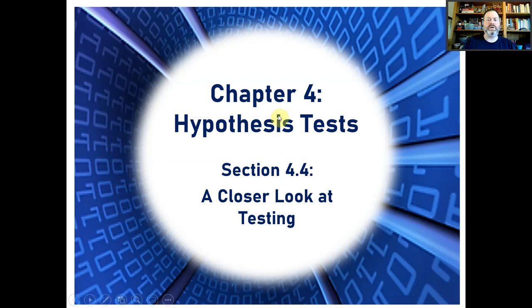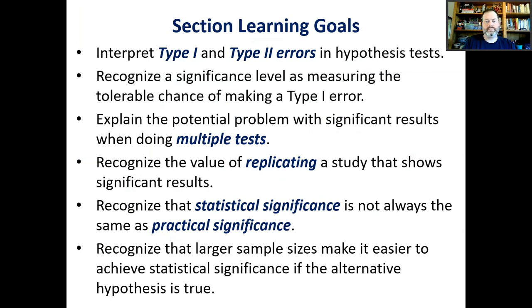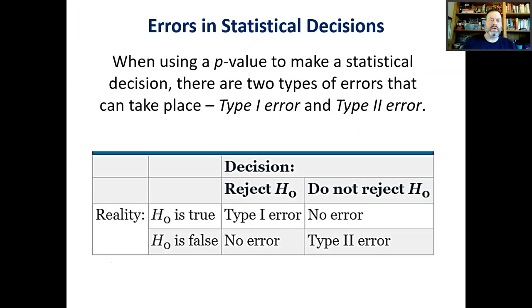In this section, we're going to keep going with Chapter 4 and look a little closer at hypothesis testing. The first thing we're going to talk about is what happens if you make a statistical decision and it's a mistake. With any statistical test, if you're using the decision rule to make a statistical decision, you could either be right or wrong for each decision.